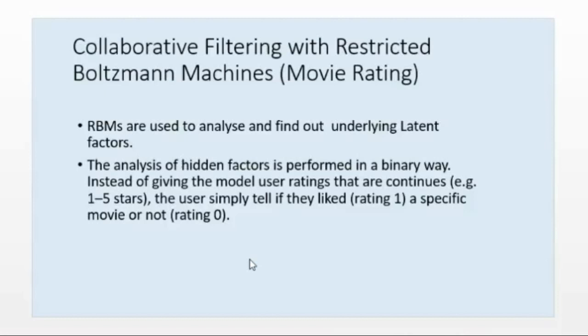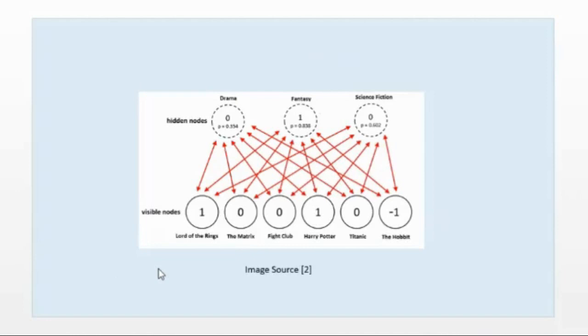For each movie, the user provides whether he or she likes the movie (one) or does not like the movie (zero). From these two binary values — like and not like — we will find out the probability of the latent factors. For example, we have seven movies: Lord of the Rings, The Matrix, Fight Club, Harry Potter, Titanic, and The Hobbit as visible nodes.